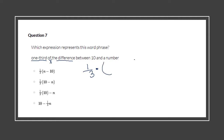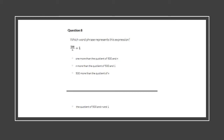Which expression represents the word phrase 'one third of the difference between 10 and a number'? 'Of' means times, and 'difference' means I'm going to be subtracting something before I multiply, so I need to put parentheses around that. The answer is one third times the difference between 10 and a number: (1/3)(10 − n).